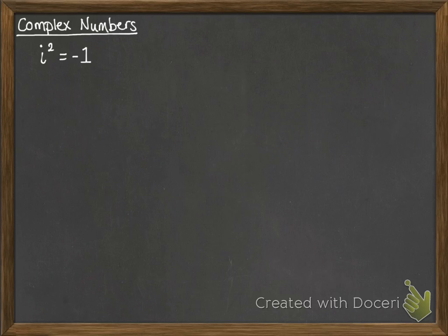Just think about going back to when you learnt about negative numbers. You've been using them for a long time and been totally happy with them — you manipulate and work with them all the time. But they don't really exist either. They're an abstract concept that help us to work out other things, but you can't have a negative amount of apples. You can't count a minus number of things. However, we can do some very useful things with them. It's the same sort of principle with complex numbers.